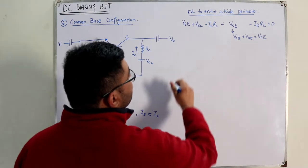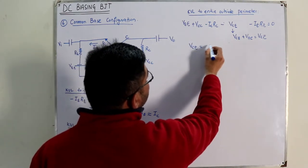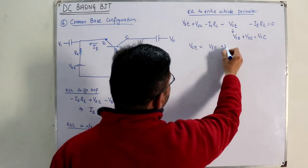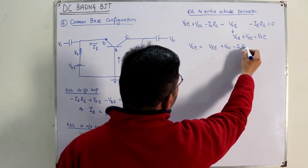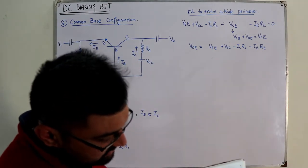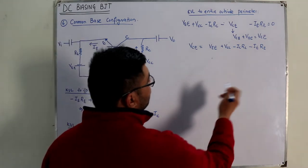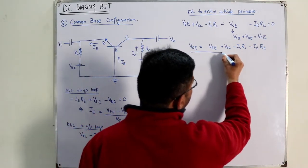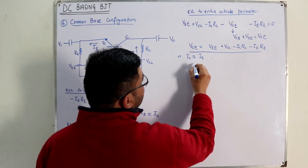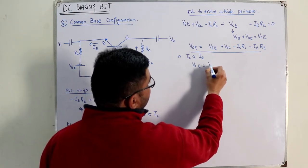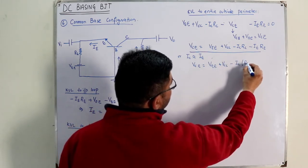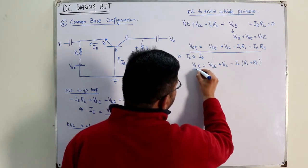Therefore VCE = VEE + VCC − IC·RC − IE·RE. You can put IE approximately equal to IC, or write it as: VCE = VEE + VCC − IC·(RC + RE). This approximation is valid because IC ≈ IE.